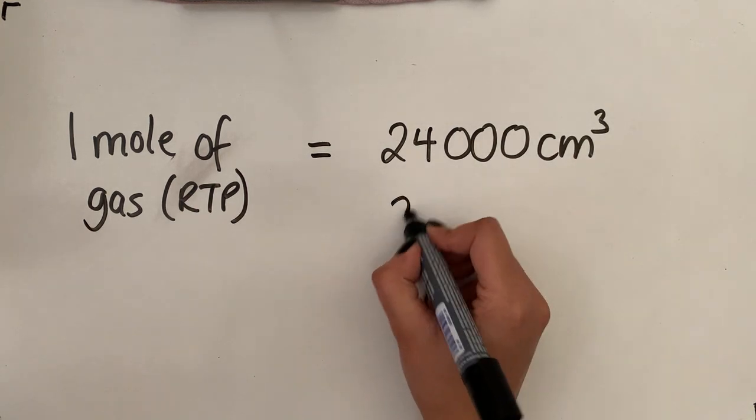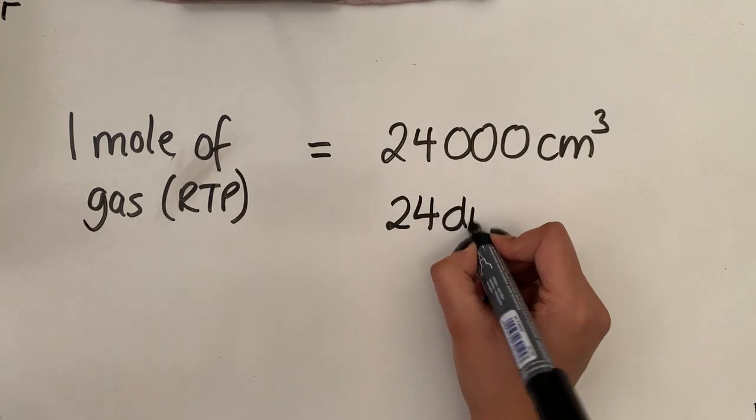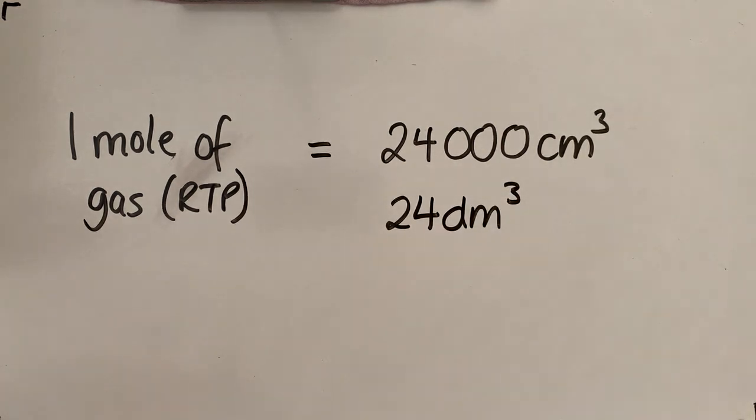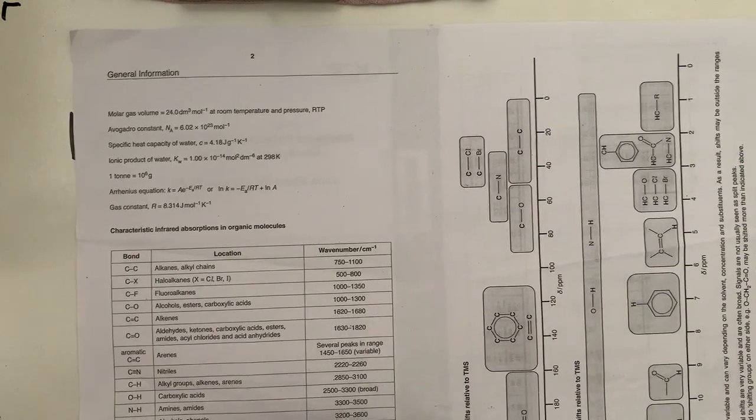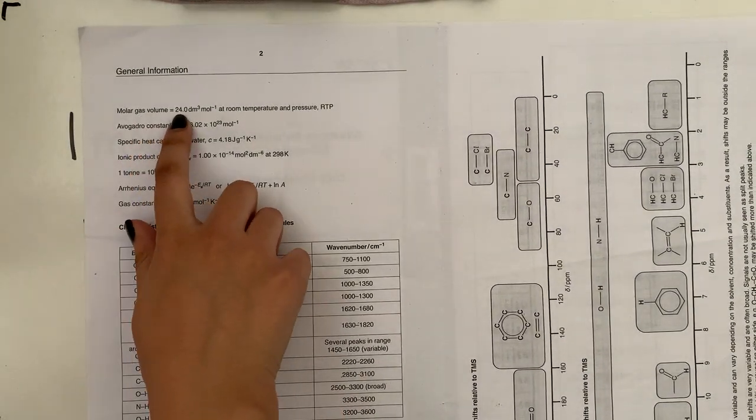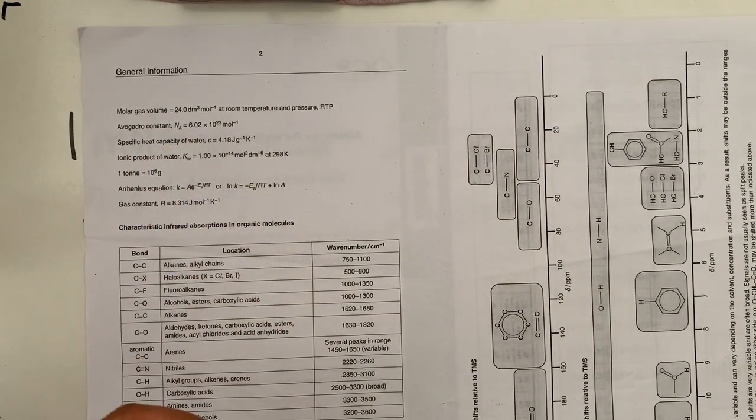Or if you convert that into decimeters cubed by dividing by a thousand, it would occupy 24 decimeters cubed. That bit of information is actually given to you in the data sheet. So data sheet, if you open it up, it does tell you over here the molar gas volume is 24 decimeters cubed per mole at room temperature and pressure.